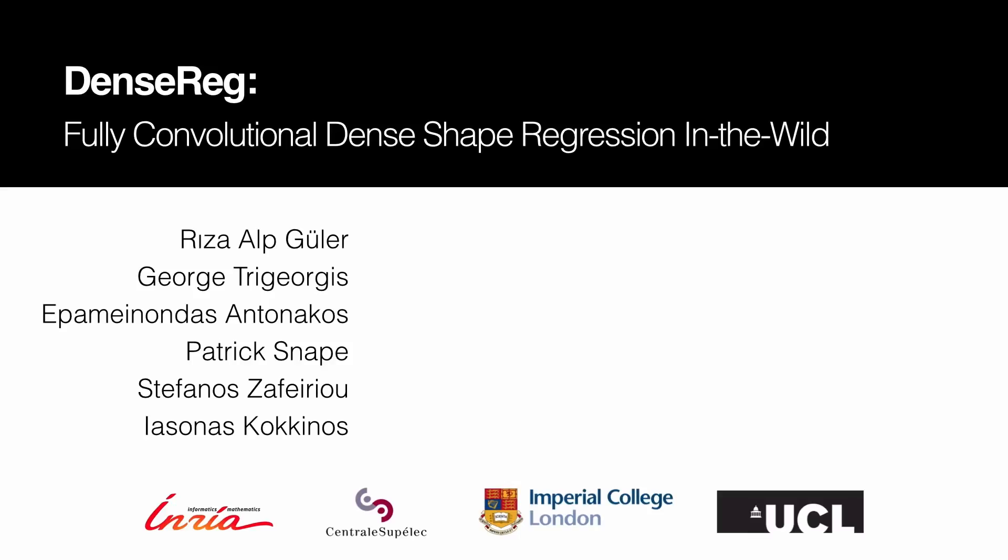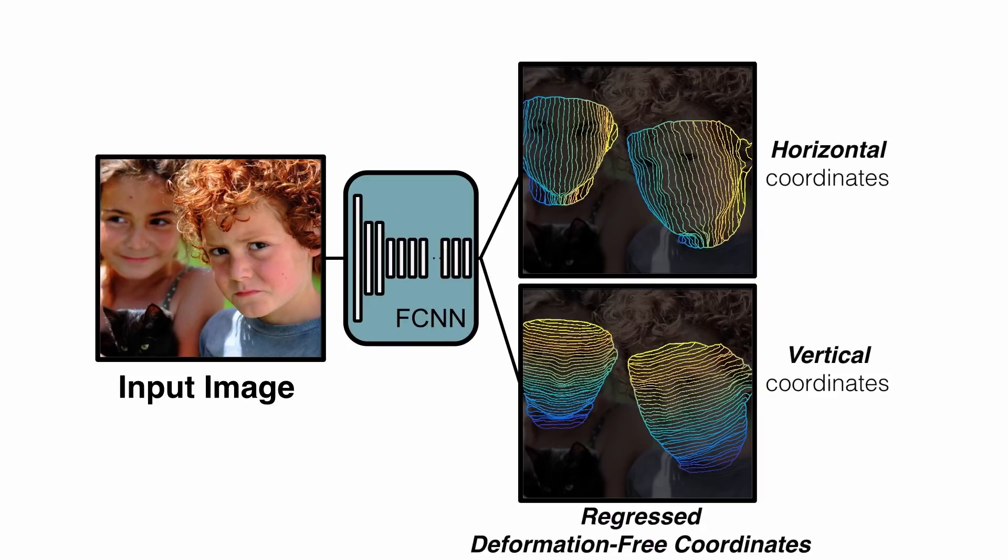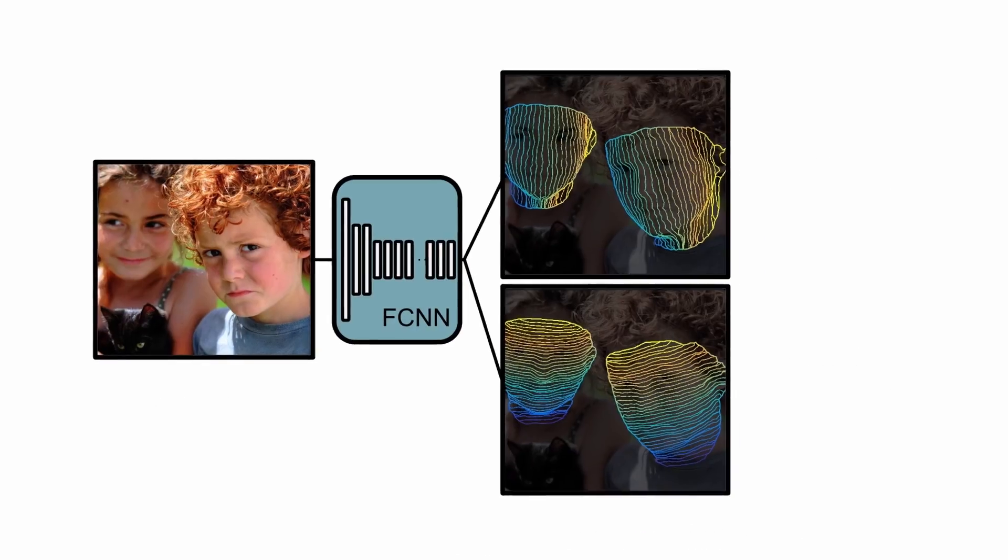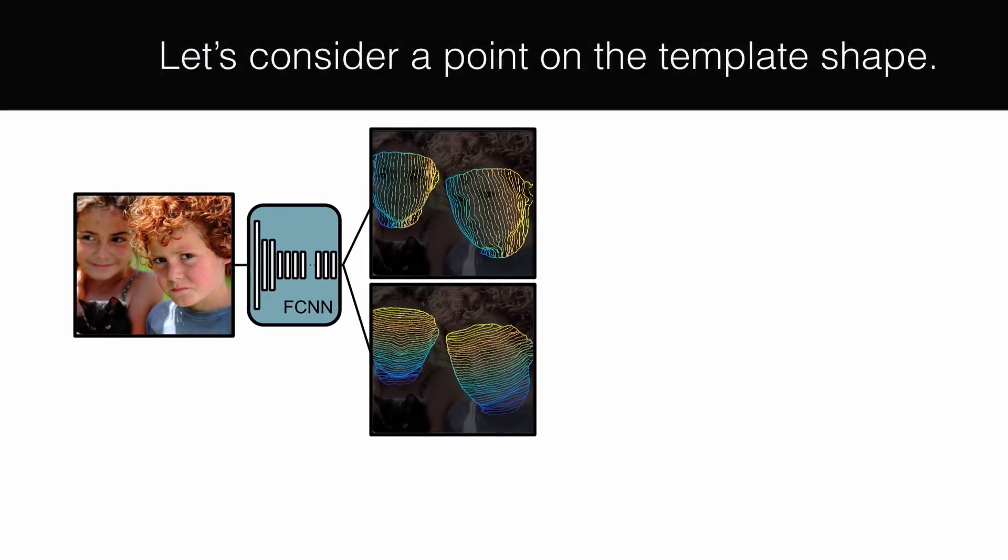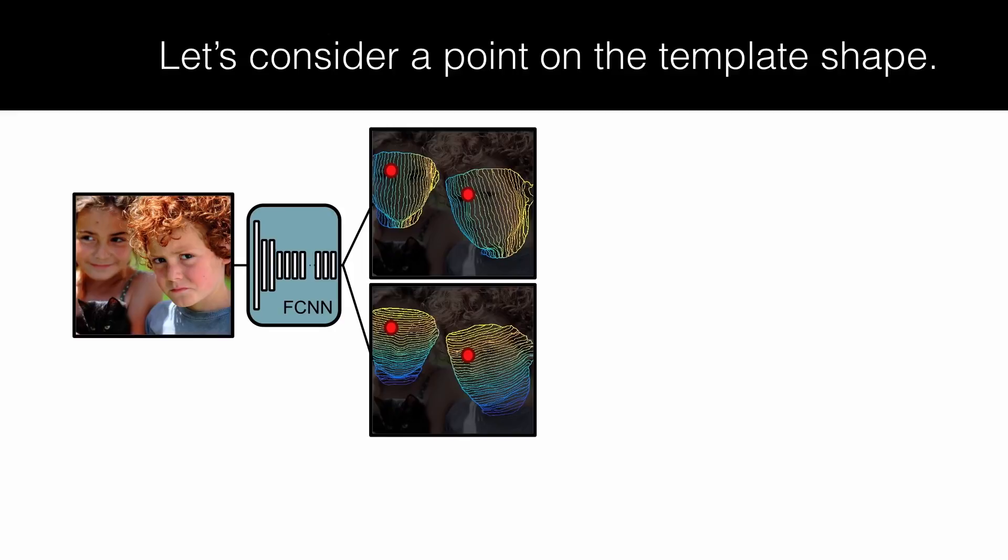Luckily, there was a recent architecture called DenseReg that did this for all sorts of objects and got decent results, so we could start with that architecture. In the first step, the network will classify a pixel as belonging to either the background or one of several region parts, which gives a rough estimate of surface coordinates. This is essentially a labeling task that can be trained using gradient descent. In the second step, a regression model will indicate the exact coordinates of the pixel within the region part.